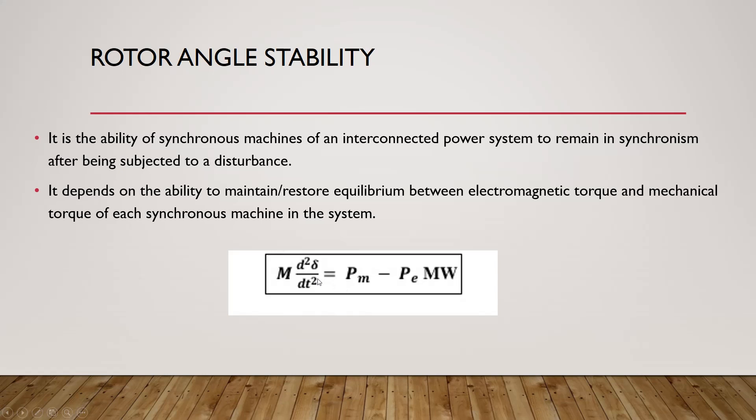When balance is achieved, the rotor angle reaches a steady-state value. To say that our rotor angle is stable, we need to achieve balance between mechanical power and electrical power. There are different criteria to determine if the system will be stable after a disturbance. These criteria depend on whether the disturbance is a small disturbance or a large disturbance.